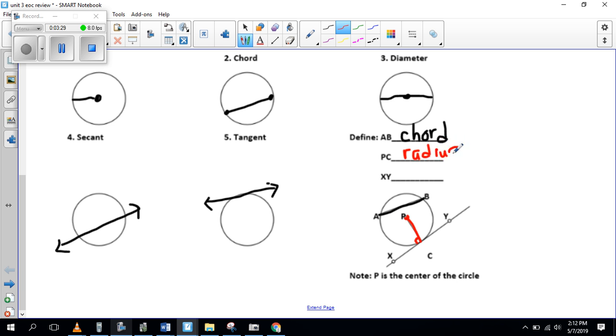Okay, and then the next one is XY. Let me do XY. Looks like it's on the outside. Only touches one time. I think that's where you get a tan from. So you're tangent.